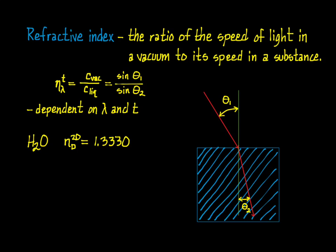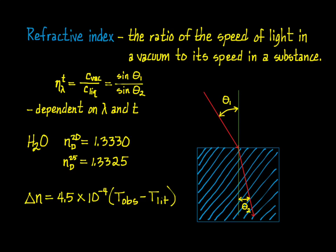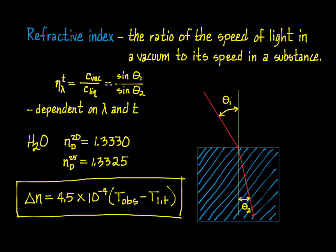The index of refraction at 20 degrees Celsius for water is 1.3330. Most refractometers use 254 nanometer wavelength light as the source. Historically, this corresponds to the so-called D line in the emission spectrum of sodium vapor, and thus the D subscript that you sometimes see next to the refractive index symbol in data tables. As mentioned, refractive index is temperature dependent. At 25 degrees Celsius, the refractive index of water decreases to 1.3325. Over the range of temperatures typically encountered in a laboratory, this dependence is nearly linear, and the difference in refractive index can be expressed with a simple equation. Using this equation, you can correct a measurement made at, say, 23 degrees Celsius to what it would be at 20 degrees Celsius for comparison.